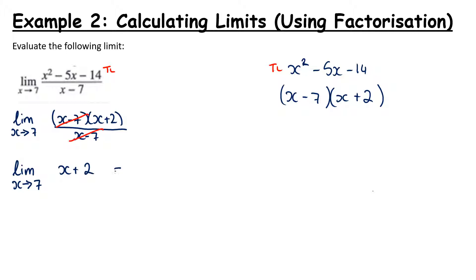Now I'm able to substitute in and work that limit just like example 1 because I won't get an error. The limit as x tends towards 7 of x plus 2 is going to be 7 plus 2, substituting in for x, which gives me 9.